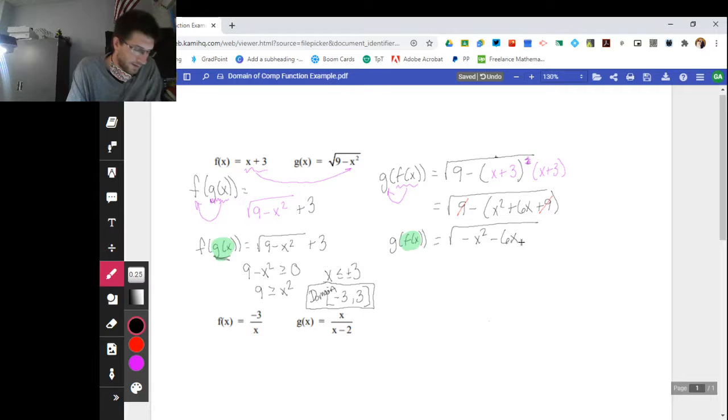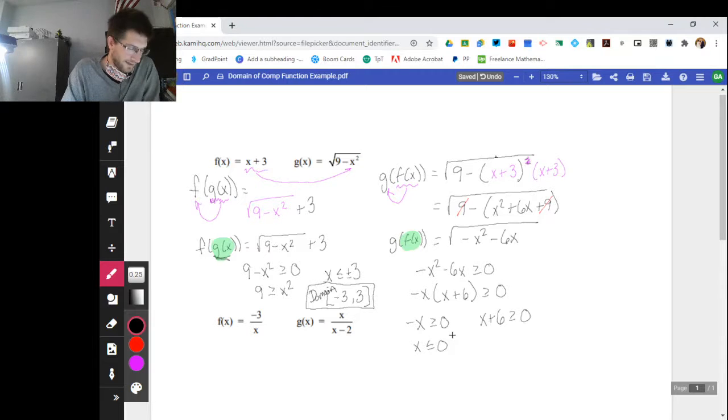Same idea over here. If I look at the composite, I want the inside of this root to be greater than or equal to zero. I can take a GCF out. I'm going to take a negative x out, which leaves me with x plus six left over. Zero product property says I can take the first piece, solve it, the second piece, and solve it. If I divide by a negative, my inequality symbol switches. So now it's x is less than or equal to zero. Subtract six, greater than or equal to negative six. So the domain here looks like negative six to zero inclusive.